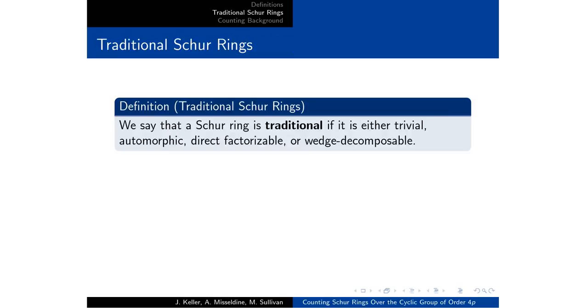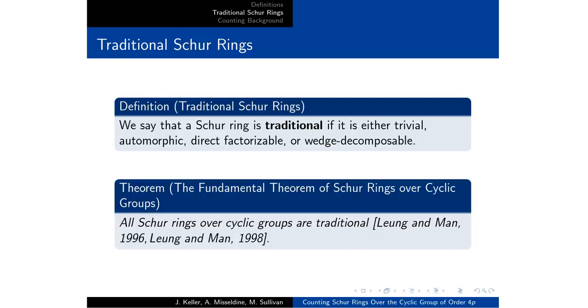So those four previously mentioned: the wedge, direct, automorphic, and trivial are what we call traditional Schur rings. That's very useful because according to Leung and Mann, all of these Schur rings over cyclic groups are traditional. So now we have an exhaustive list, which if we can enumerate them and eliminate any overlap, we can count the number of Schur rings over the cyclic group of order 4P.